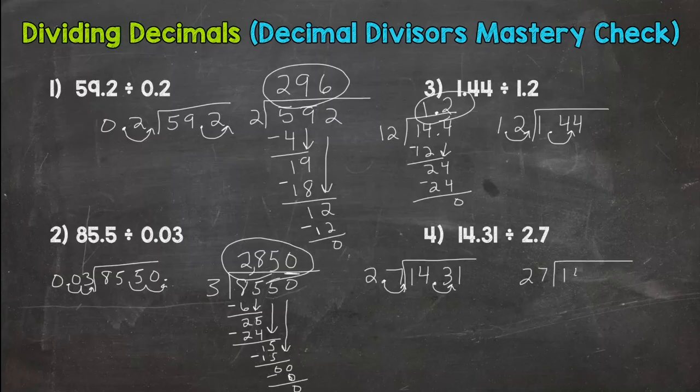So rewrite our problem. Is my divisor whole now? Yes. So I can bring the decimal straight up. Now I can't do 27 out of 1. Can't do 14 divided by 27. So I have to go to 143 divided by 27. Now I do not know my 27 facts off the top of my head. So I need to estimate and check. And the way my brain works I would think okay 27 is close to 25.